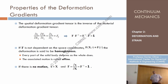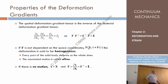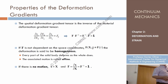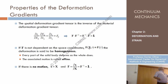Sometimes the deformation gradient tensor F is constant — not dependent on the particle. In that case, we say the deformation is homogeneous. Recall: when something doesn't depend on time in a spatial description, we say the motion is stationary. When something doesn't depend on space, we say it is homogeneous.